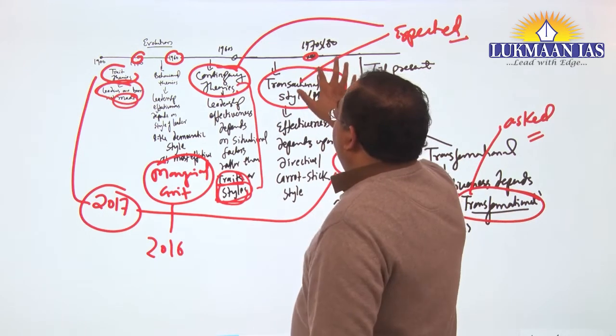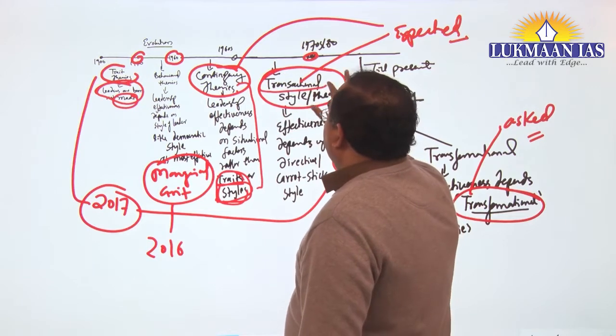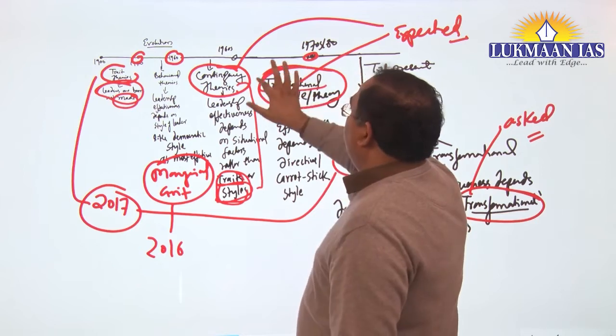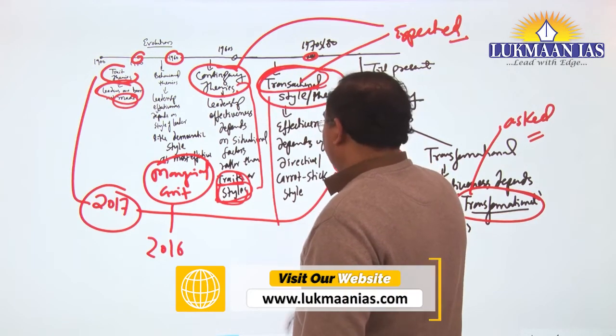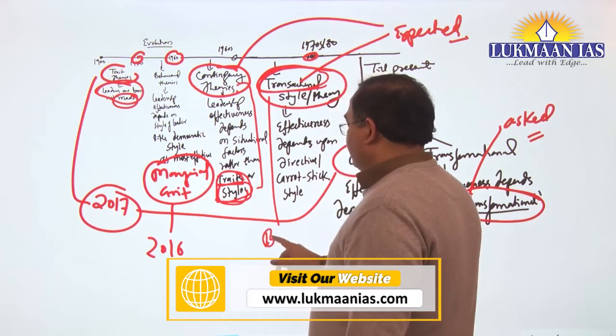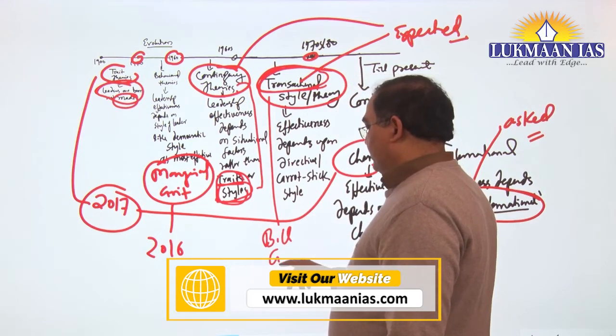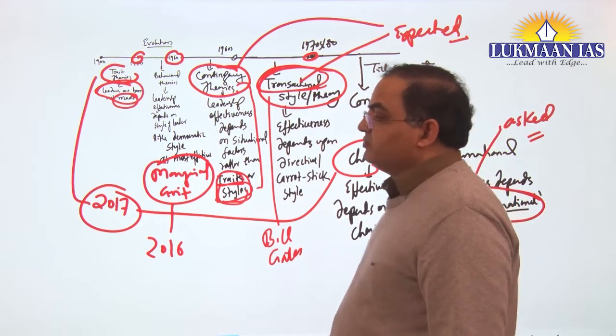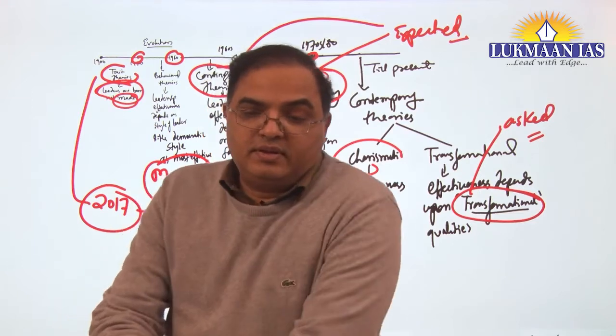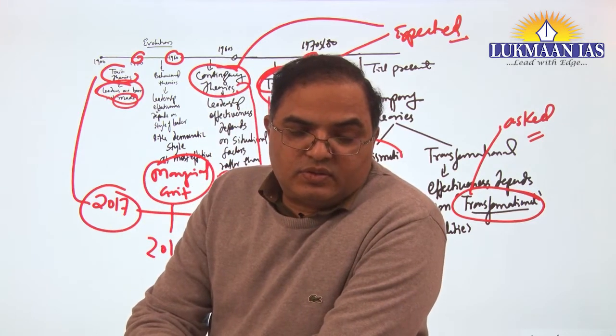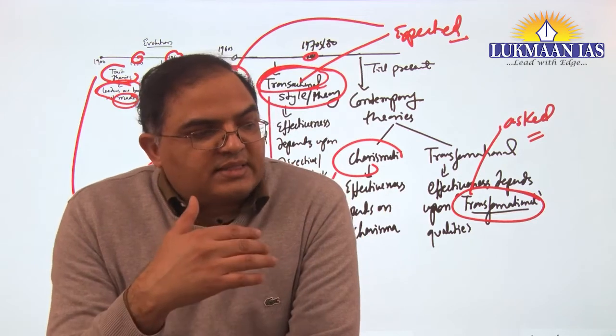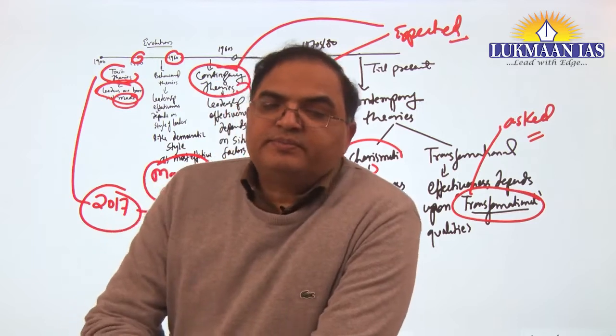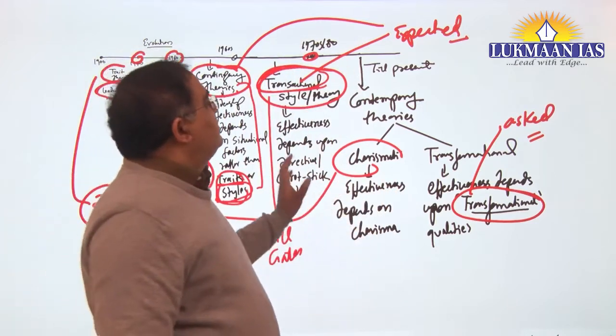But thereafter there is again the development like transactional style. It is nothing but a bit re-emergence of traditional directive style, but it was formulated here which suits to certain corporate sector. Like Bill Gates is largely considered as this transactional style of leader. Bill Gates example is given in that way. So transactional style leaders are the leaders who are task masters. Most of the managers are transactional style of leaders.